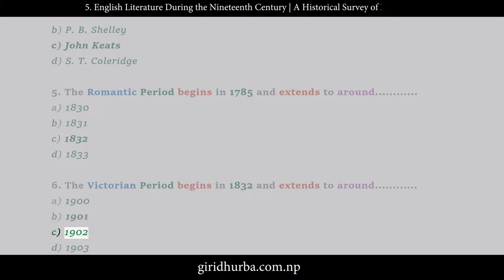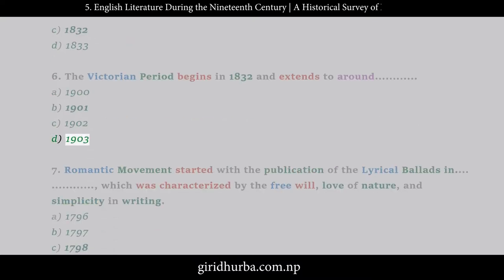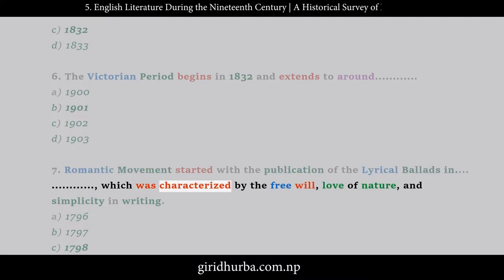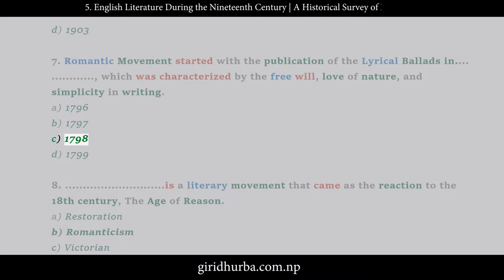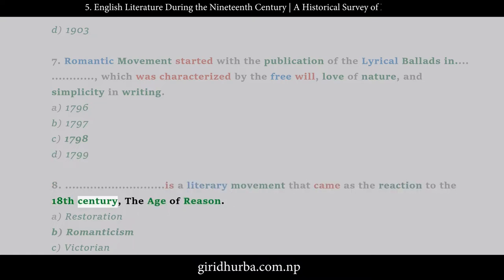Question 7: The Romantic movement started with the publication of the Lyrical Ballads, which was characterized by the free will, love of nature, and simplicity in writing. A. 1796, B. 1797, C. 1798, D. 1799.